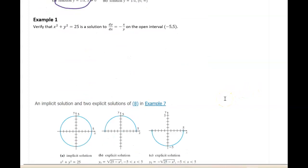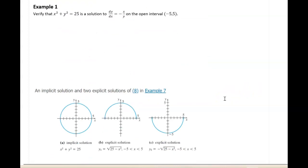Let's look at an example and talk more about types of solutions. So let's verify that x squared plus y squared equals 25 is a solution to dy dx equals negative x over y on this interval. I want to point out that this differential equation is a differential equation because it has a derivative in it.